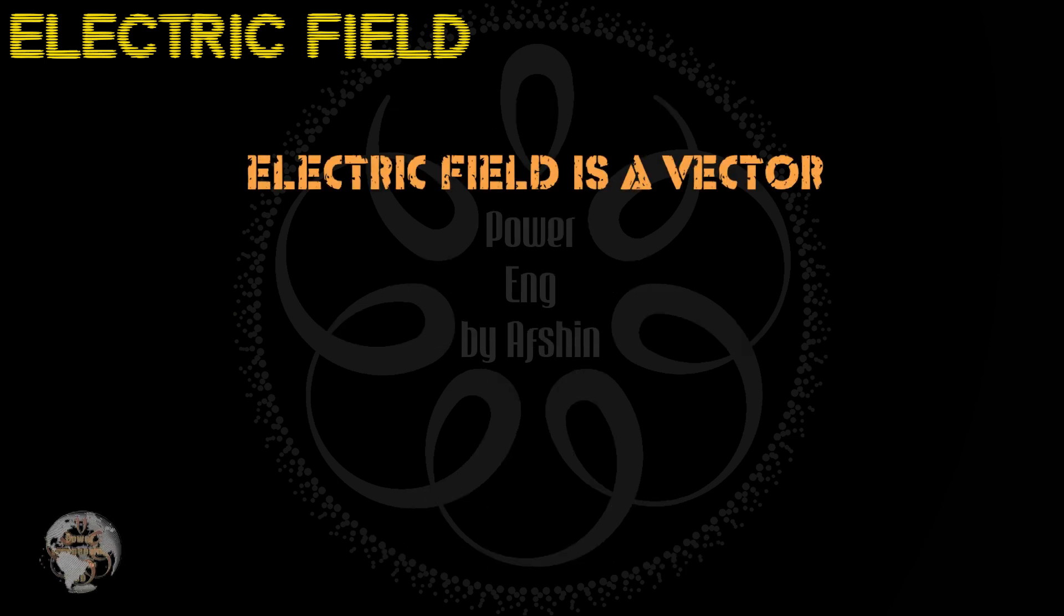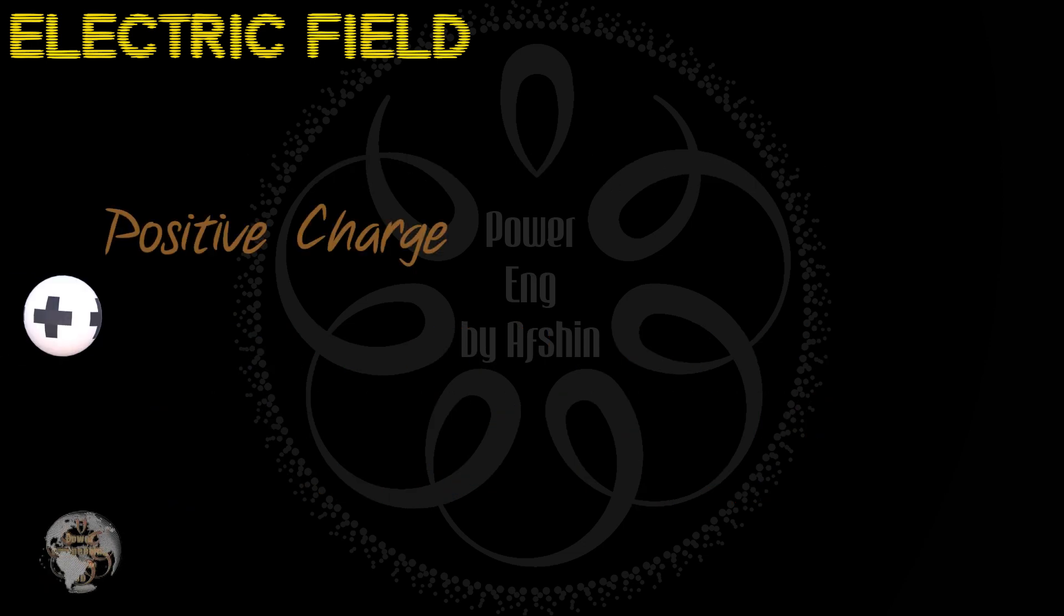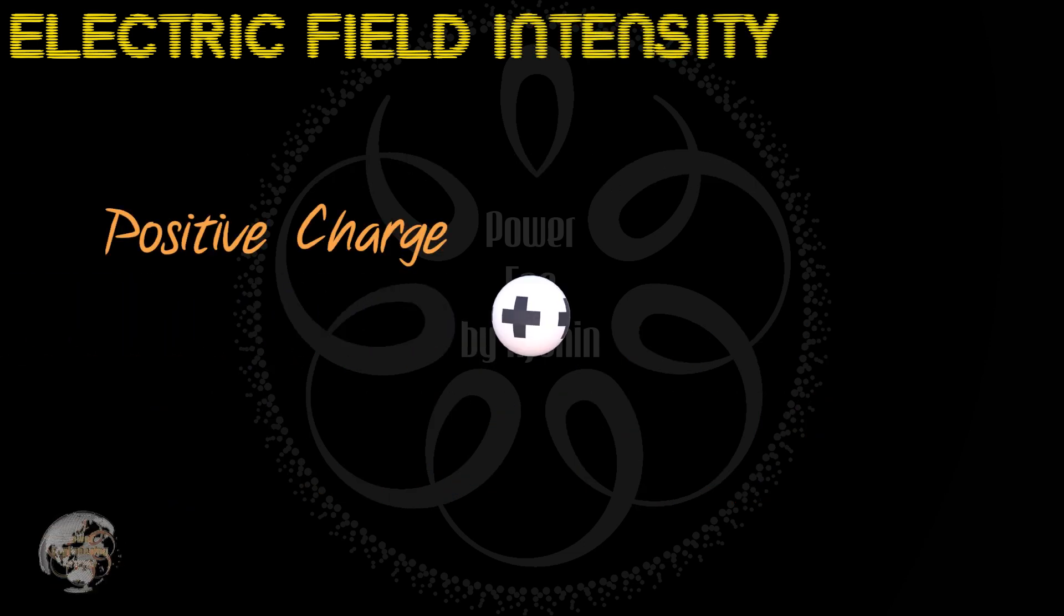An electric field is a vector quantity that exists at every point in space and is created by electric charges. The magnitude and direction of the electric field are represented by the value of E, which is called the electric field strength or electric field intensity.